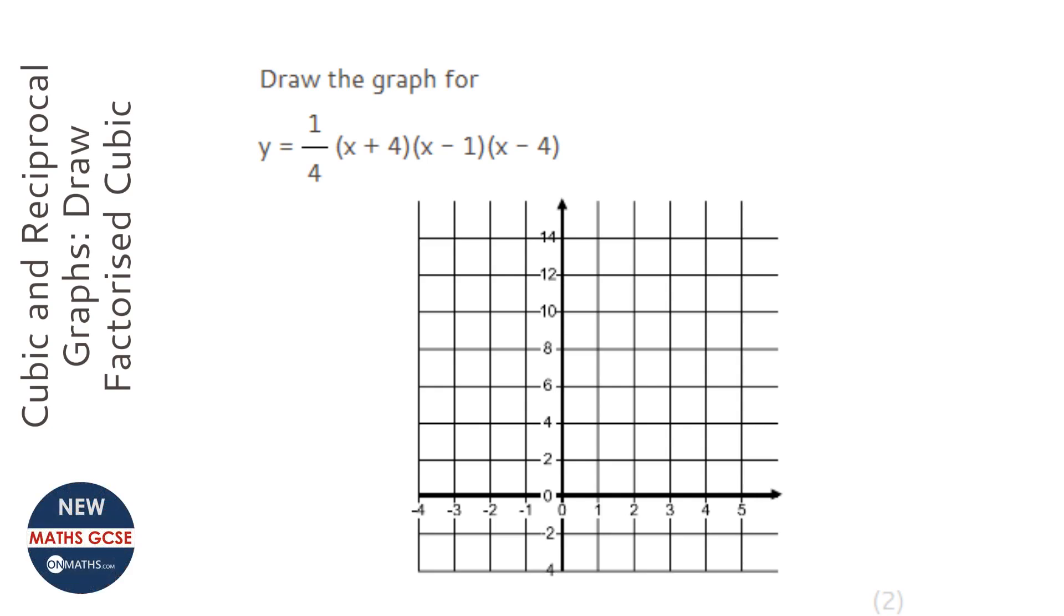I'm going to type in a quarter times bracket and I'm going to start off with a 5, so 5 plus 4, close bracket, open bracket, 5 minus 1, close bracket, open bracket, 5 minus 4. And I'm just going to fill in each of the x values and find out what the coordinates are, starting with 5. So I'm going to press equals and that says 9.